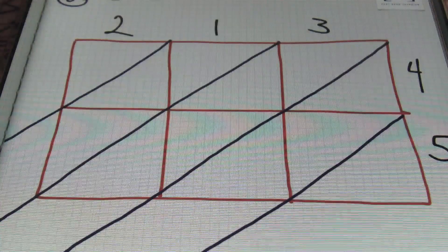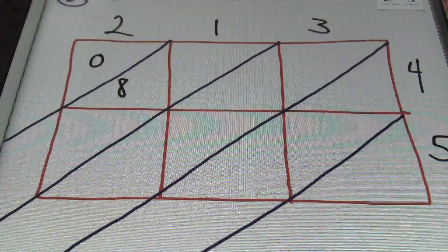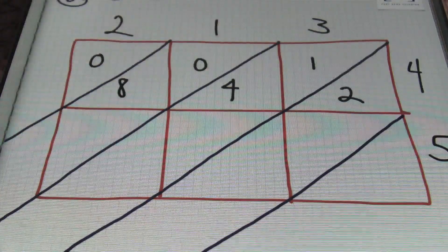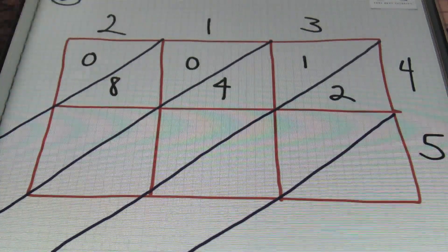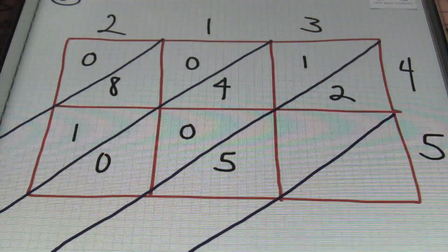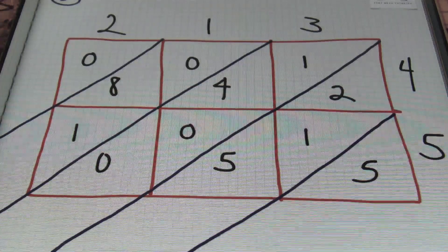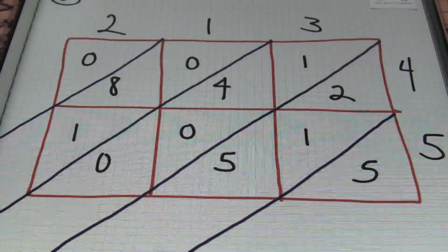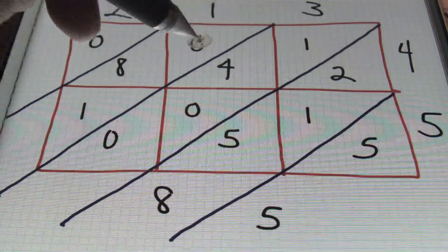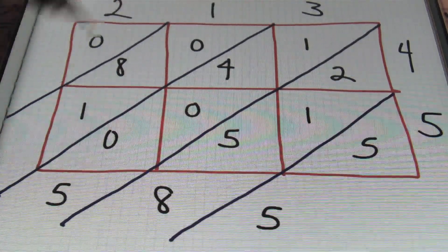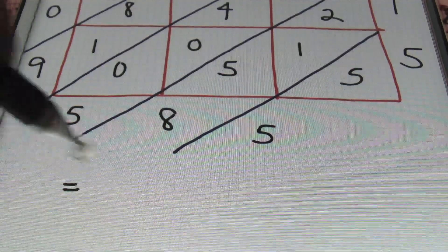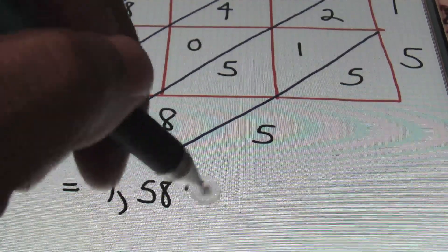We're going to multiply this out. Two times four is eight, so that's zero eight. One times four is four, so zero four. Three times four is twelve, so I have one and two. Then multiplying everything by five: two times five is ten, so one and zero. One times five is five, so zero five. Three times five is fifteen, so one and five. From this point we'll add diagonally. I'll bring down my five, then two plus one plus five gives me eight, one plus four is five, and eight plus one is nine. So our result is 9,585.